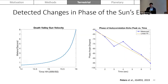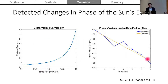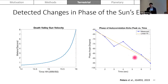Detecting changes in the sun's echo is important for demonstrating passive synthetic aperture radar imaging. Because we have a moving sun reflection point, we can track the phase of the autocorrelation echo peak to monitor very minute changes in range positioning. Monitoring the phase and recovering the phase history is essential for showing passive synthetic aperture radar imaging.